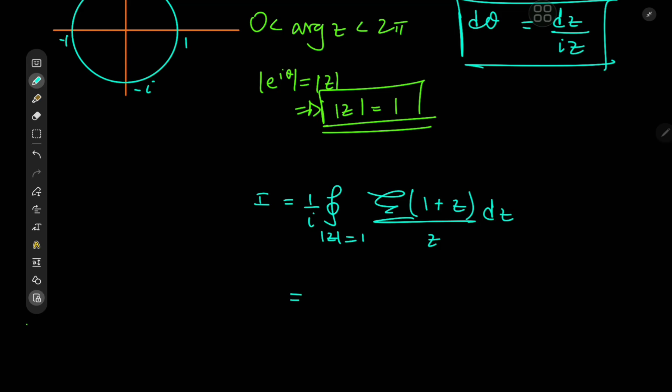And this is pretty easy to evaluate because all we need is Cauchy's residue theorem. So the integral over the closed contour equals 2πi times the sum of the residues of our function. ζ(1 + z)/z.